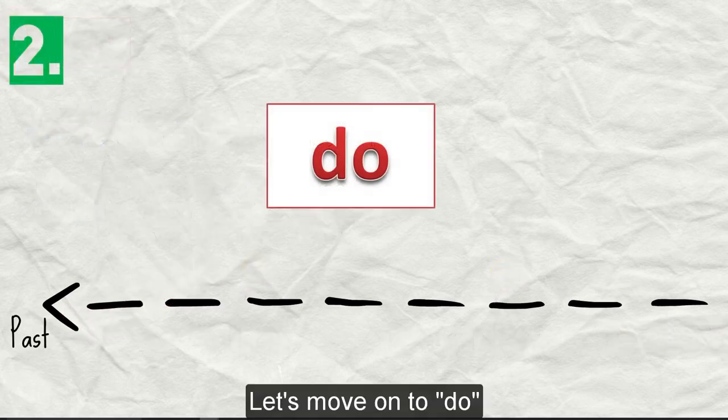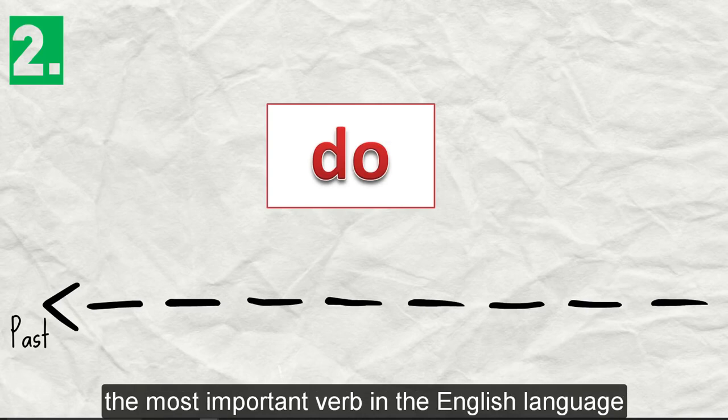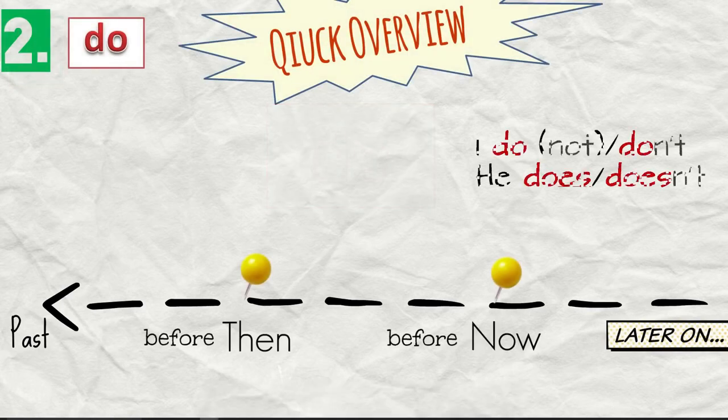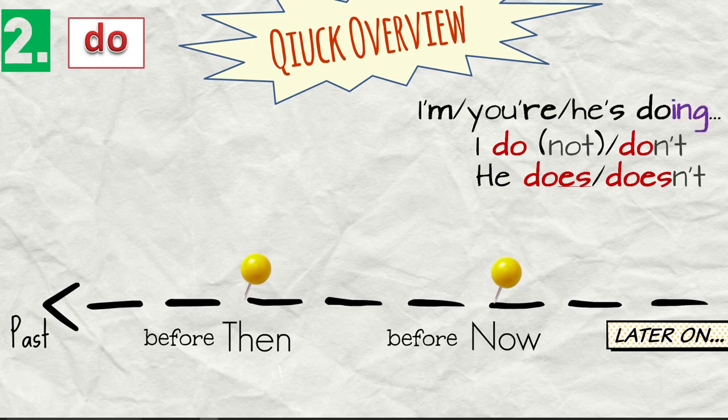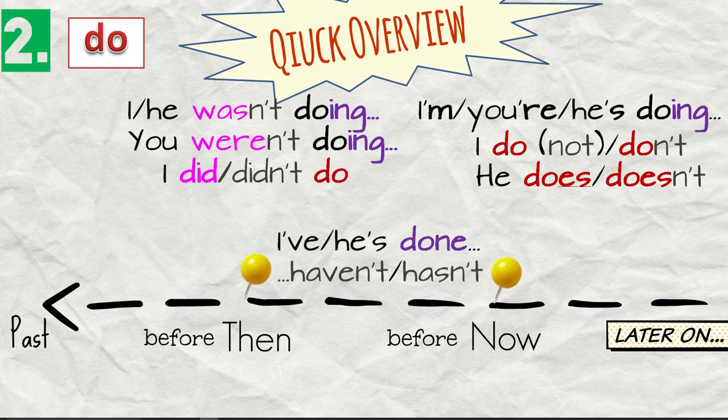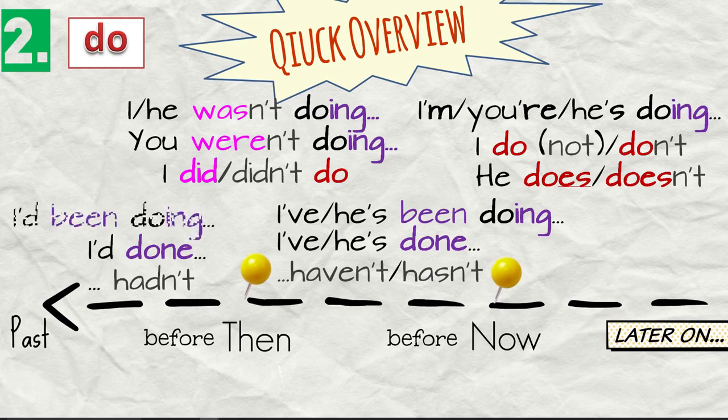Let's move on to do. We may say it's the second most used or the most important verb in the English language. So let's have a quick overview. For example, we'll say I do or I don't. He does, he doesn't. I'm doing, you're doing, he's doing. I did or didn't do. I was doing or you were doing or the negative. I wasn't, you weren't doing. I've done, he's done. I've been doing, he's been doing. I'd done or I hadn't done. I'd been doing.